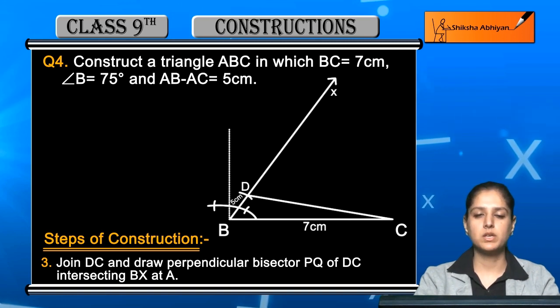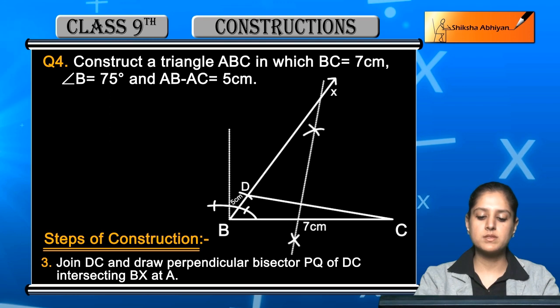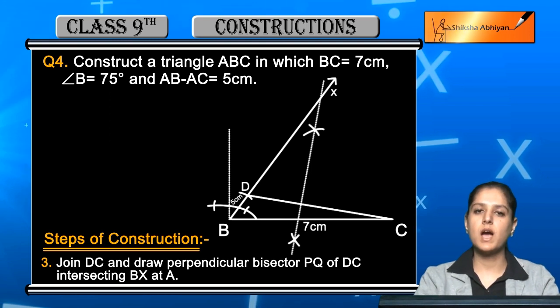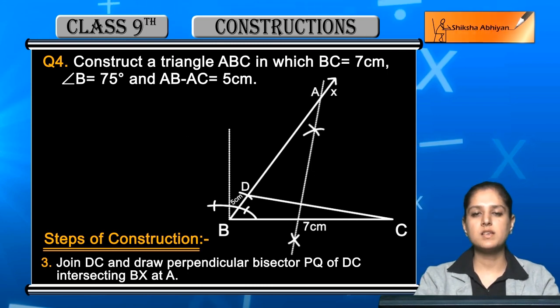Draw the perpendicular bisector PQ of DC which will intersect ray BX. Where it intersects BX, you will name that point A.